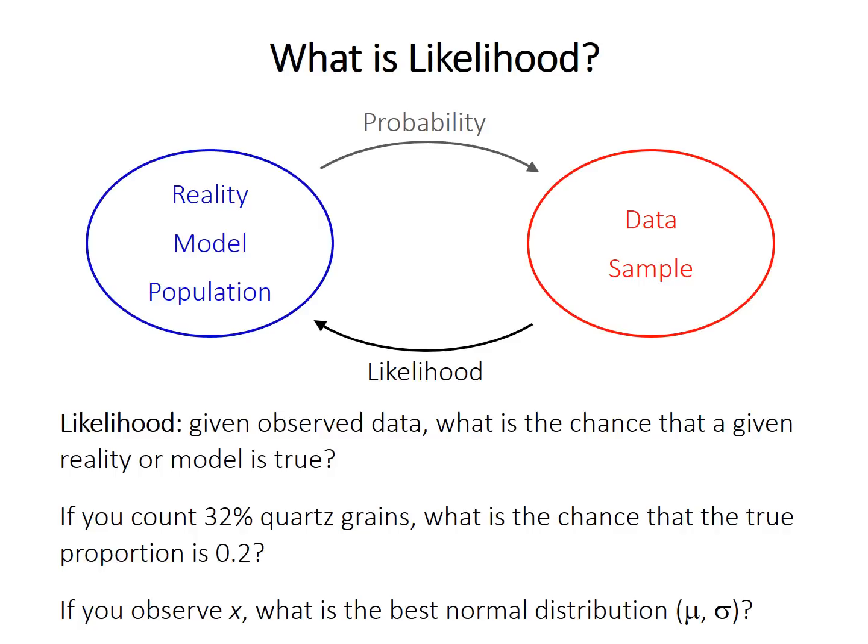So thinking about this in the reverse way, if we counted 32% quartz grains in a sample, what is the chance, or what is the likelihood, that the true proportion is 0.2?